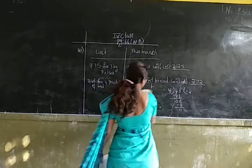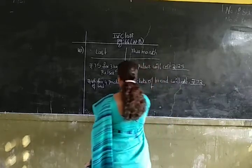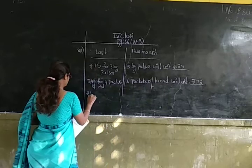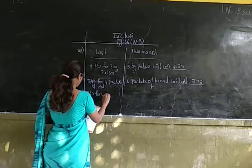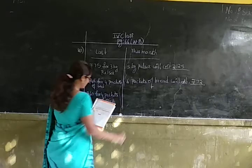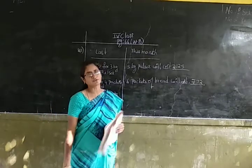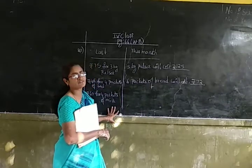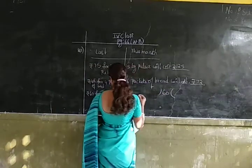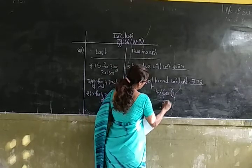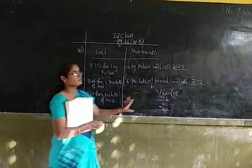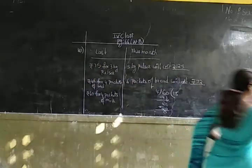Now let us do the next question. Last month Mrs. Sharma bought 4 packets of milk for Rs. 60. But this month she bought 8 packets of milk. We have to find out the cost of 8 packets of milk. First we find the cost of 1 packet: divide 60 by 4. 4 ones are 4, 4 fives are 20. So the cost of 1 packet of milk is Rs. 15.